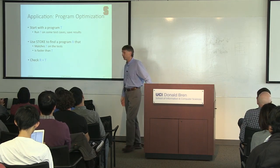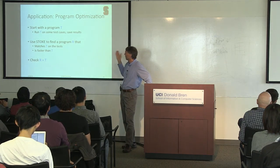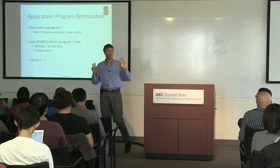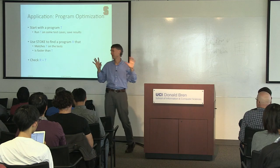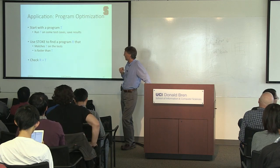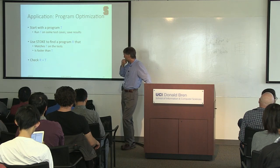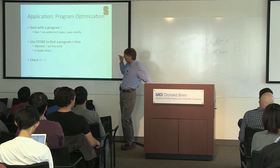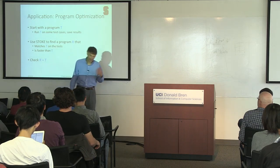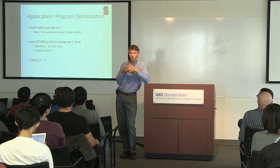Now let me tell you about program optimization in more detail. We start with a program we want to optimize — an inner loop, less than 20 lines of code, not whole programs. We run that program on test cases and save the results. Then we use STOKE to find another program that matches it on the tests and is faster. Then we check whether these two programs are actually equivalent.